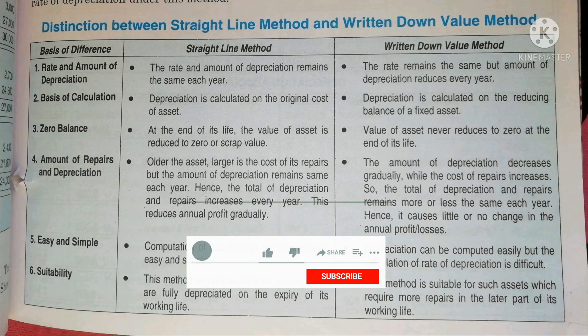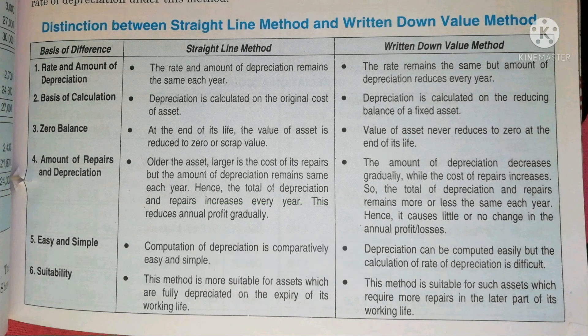Hello students. Today in this video we will discuss the distinction between Straight Line Method and Written Down Value Method. Here are three columns — basis of difference, Straight Line Method, and Written Down Value Method. The first difference is rate and amount of depreciation.